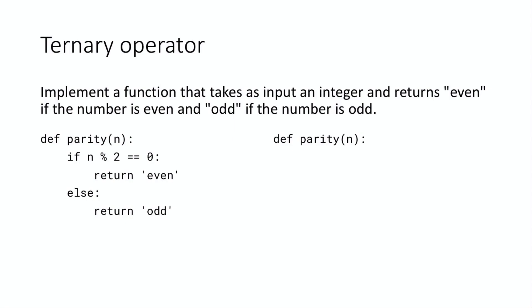Here's the problem. Implement a function that takes as input an integer and returns the string even if the number is even and odd if the number is odd. And so this is a really straightforward problem, and we have a nice solution on the left that's only four lines long.